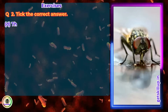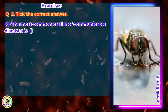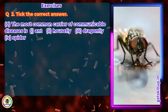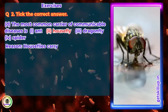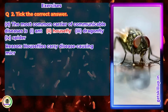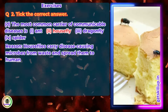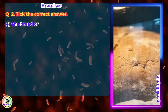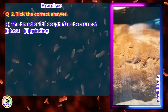The most common carrier of communicable diseases is? Answer: Housefly. Reason: Houseflies carry disease-causing microbes from waste and spread them to human food.